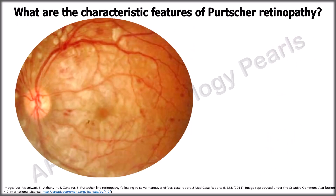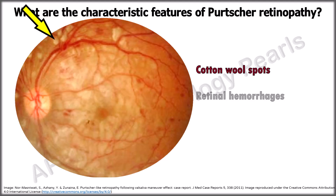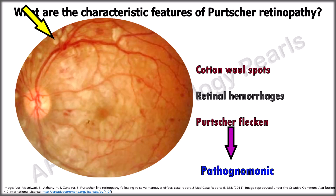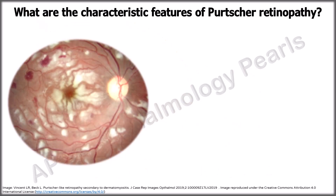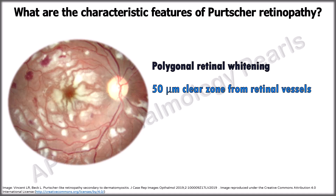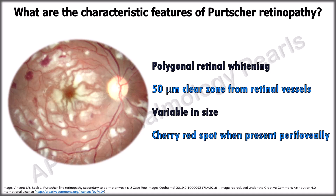The most frequent signs are cotton wool spots, seen in greater than 80% of patients, retinal hemorrhages, and Purtscher fleckens, which are pathognomonic but present in only 60% of cases. Purtscher fleckens are areas of polygonal retinal whitening at the posterior pole and around the disc, with a 50-micron clear zone on either side of arterioles and often the veins. They can vary from a quarter to several disc diameters in size and when present perifoveally result in the appearance of a cherry red spot.